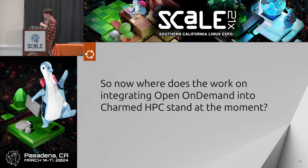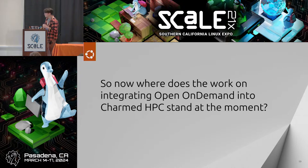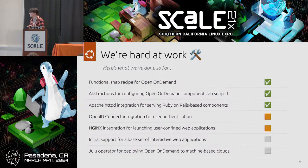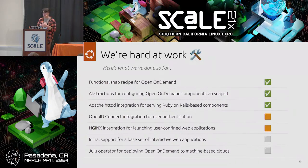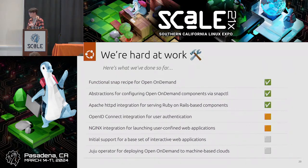Now that I've explained Open On Demand, where does the work currently stand on integrating it into Charmed HPC? We've been making steady progress on this as a community. I was still working on it yesterday while traveling here. We have a functional snap recipe — we're able to build a successful snap package with all the services Open On Demand requires. It requires three different web services, and we had to figure out how to cram all three inside a snap.